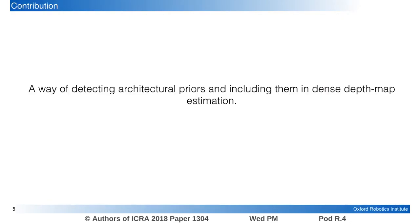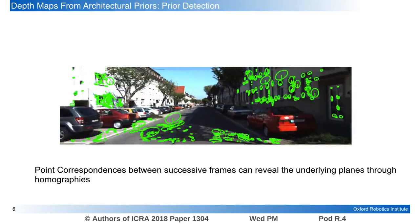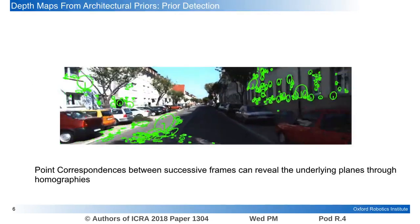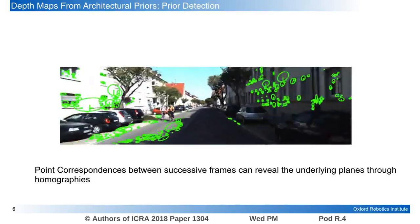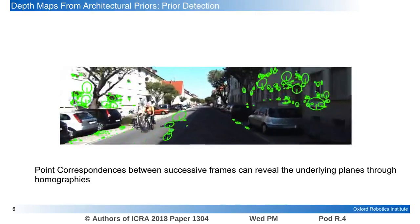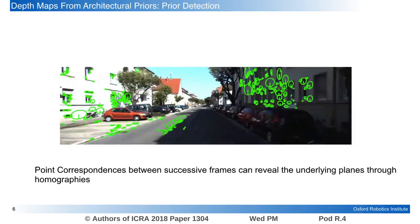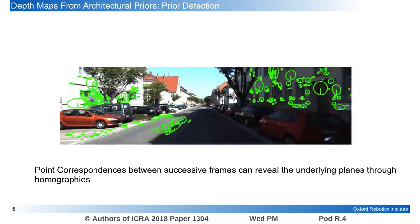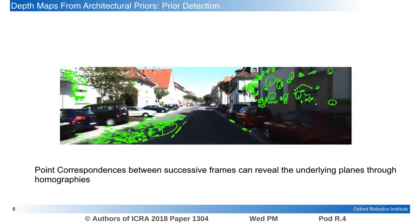In this work we offer a way of detecting architectural priors and including them in the depth map estimation. The first step in our pipeline is the detection of the architectural priors. Correspondences between two camera views can reveal the underlying planes, as points matched between different views that lie on a plane are related via homography.